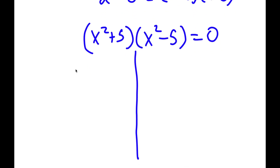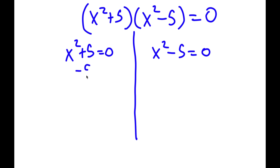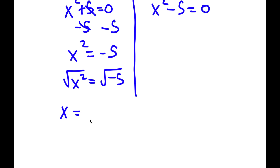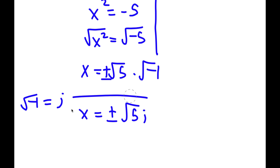This gives me two equations. I have x squared plus 5 equals 0, and x squared minus 5 equals 0. For x squared plus 5 equals 0, I subtract 5 on both sides and get x squared equals negative 5. Taking the square root on both sides, I have x equals the square root of negative 5, which I can write as the square root of 5 times the square root of negative 1, giving positive or negative square root of 5 times i. So x equals plus or minus square root of 5 times i. These are two solutions.